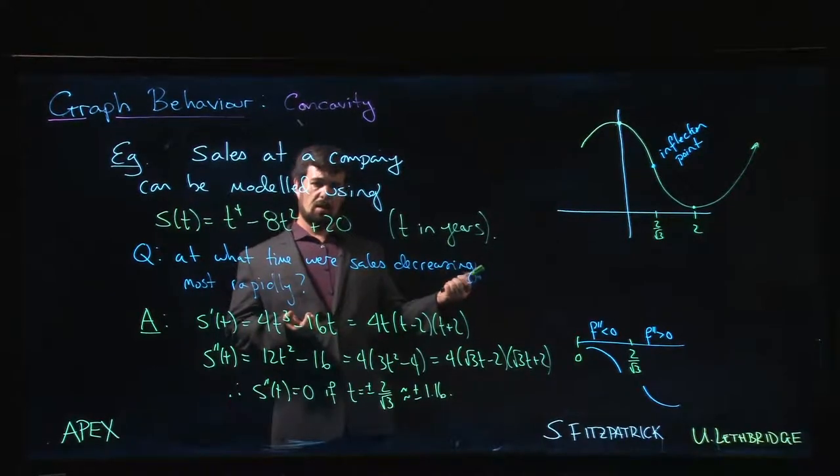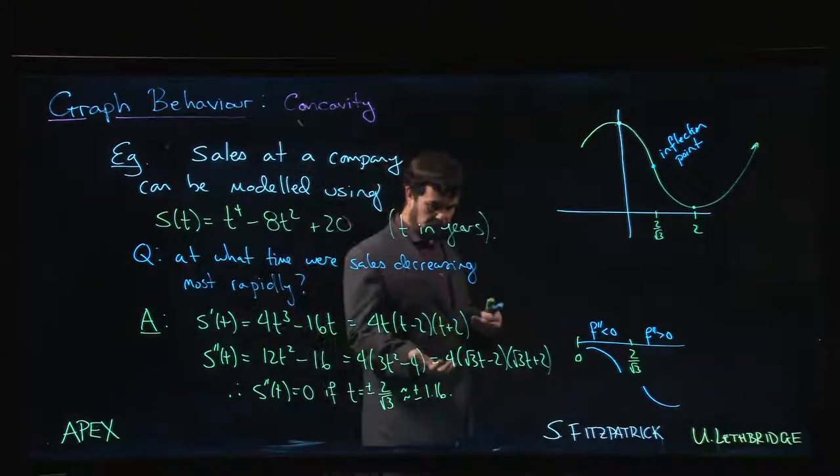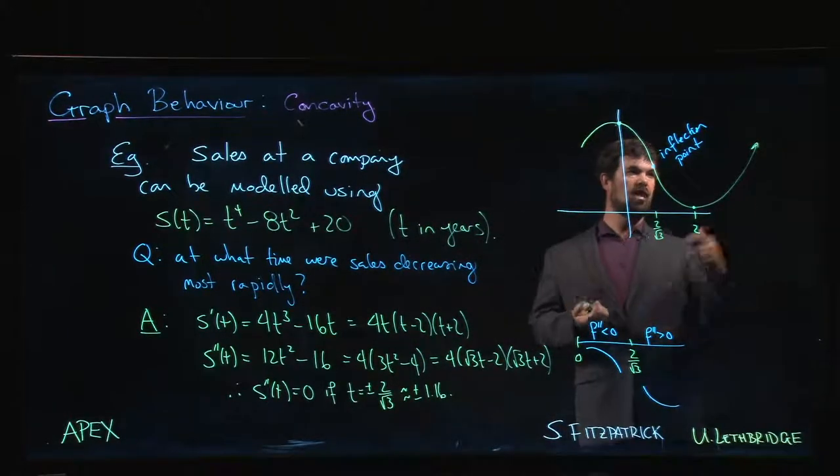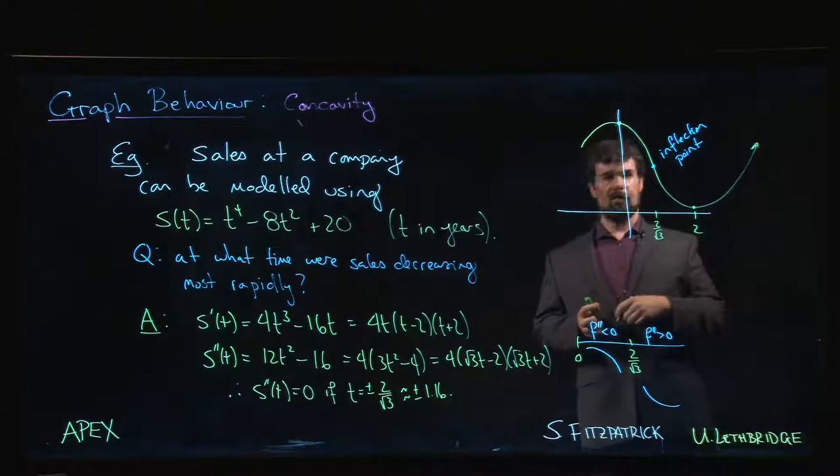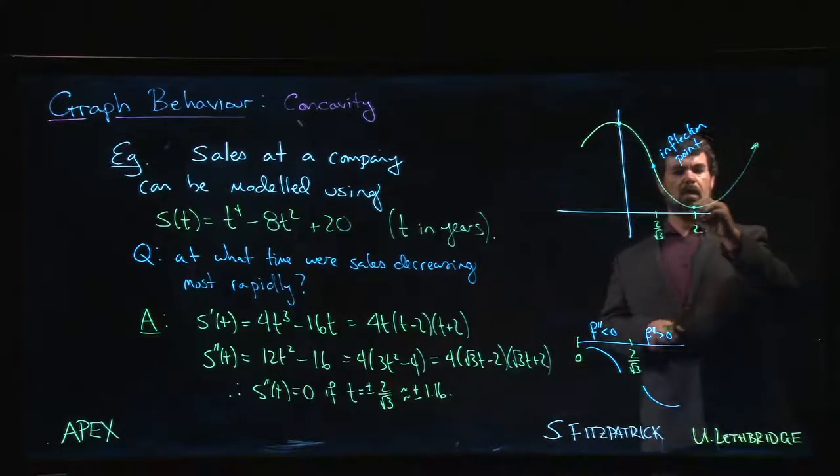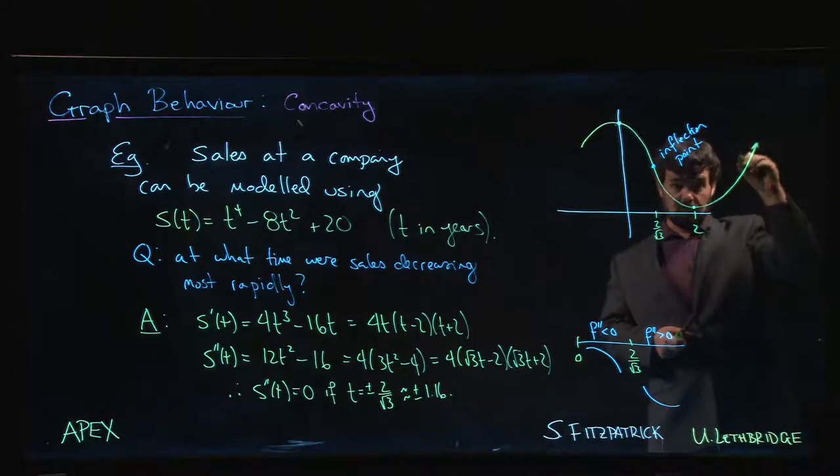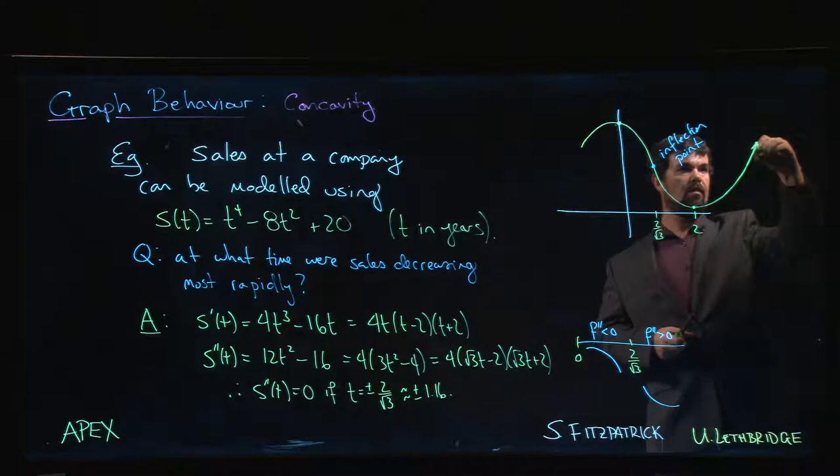By the way, while we're on this topic, another place where you might see this in common language - it's probably not accurate for the graph but suppose there was somewhere over here where we were increasing. The rate of increase is going up, up, up, so sales are increasing and the rate at which they're increasing is also increasing because the graph is concave up. Let's say we hit another inflection point and then the graph becomes concave down. Sales are still going up but they're not going up as rapidly as they were before.